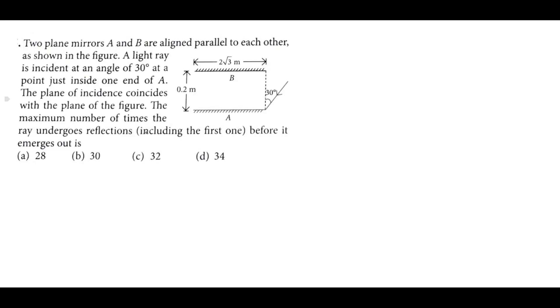The maximum number of times the ray undergoes reflection, including the first one, before it emerges out. If we can see the reflection here, we will find out. If this angle is 30 degrees, it will reflect, then this angle is 30 degrees.